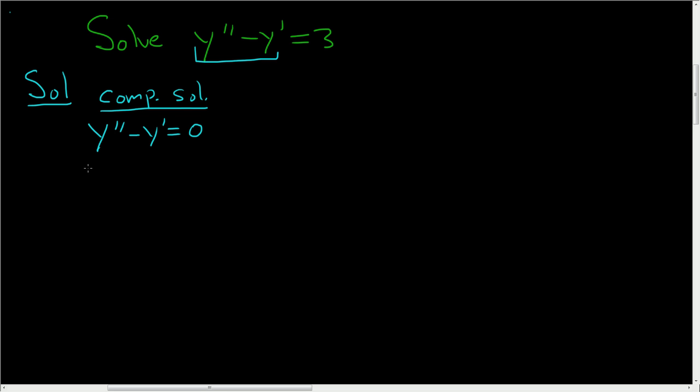So here we can write down the characteristic equation. There's a second derivative here, so you put a two. This is the first derivative, so you put a one, so just m. It's also called the auxiliary polynomial, or equation, auxiliary equation. I prefer characteristic, it's easier to say.